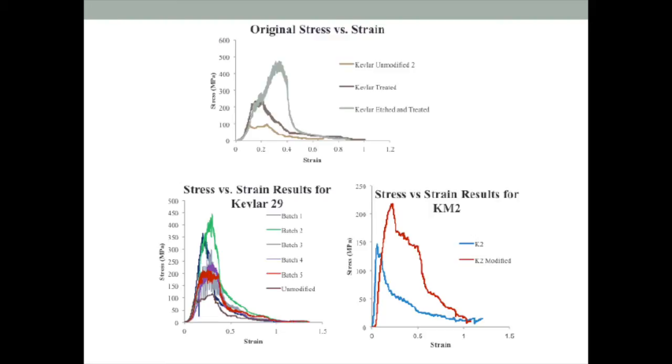The original tensile test results were performed on a piece of unmodified, etched, and un-etched treated Kevlar 29. The etched gave us the highest tensile strength of around 450 MPa, which is why we continued with this process. The results after all the batches were completed continued to follow this trend with 95 MPa for the unmodified, and between 450 and 205 MPa for the modified. We used these results to find the parameters used in our ballistic modeling, which include elastic modulus, aerial density, and maximum tensile stress.